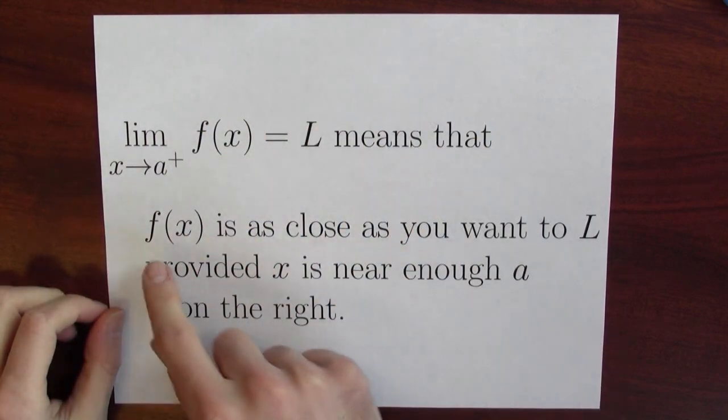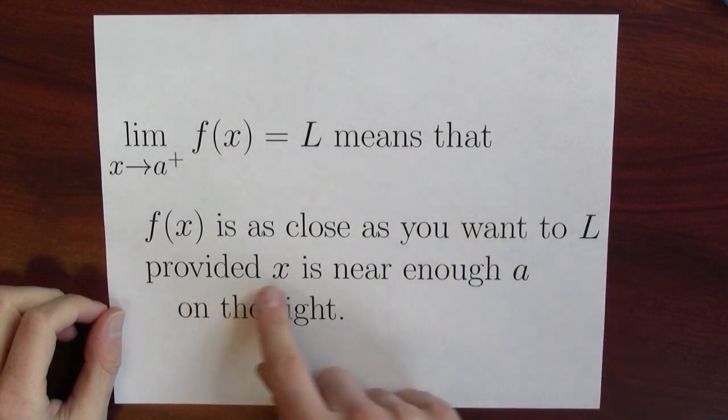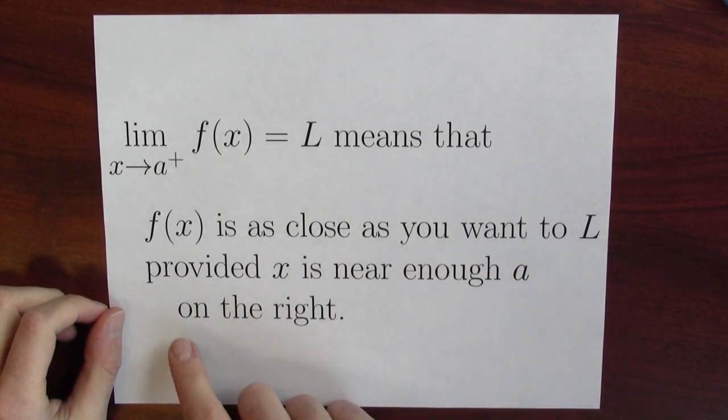To say that this is equal to L means that f of x is as close as you want to L, so just like before, provided x is near enough a on the right-hand side. So we're going to use the little plus sign to denote approaching from the right-hand side, and we can play the same game for approaching from the left-hand side.